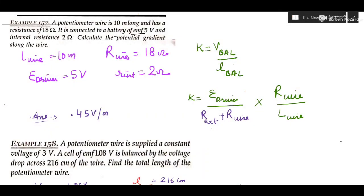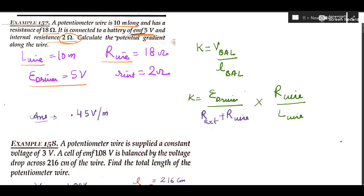In the first numerical, a potentiometer wire is 10 meters long and has a resistance of 18 ohm. Note down the particulars: this is the length of the potentiometer wire, this is the resistance of the potentiometer wire. It is connected to a battery of EMF 5 volt with internal resistance 2 ohm. This is the EMF of the driver cell and its internal resistance is 2 ohm.